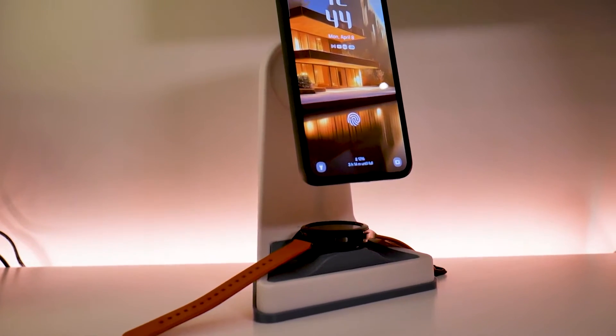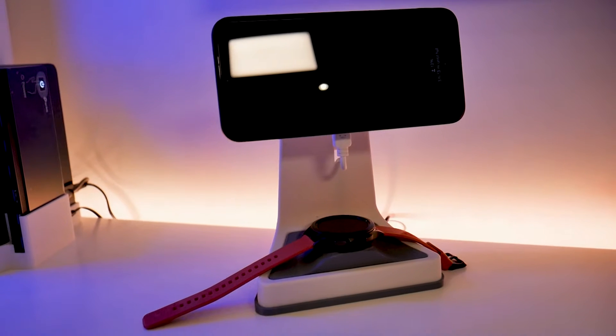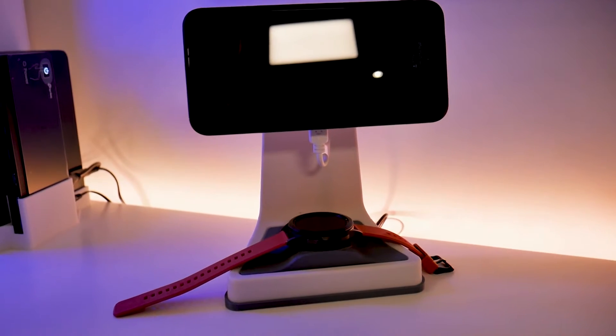On the bottom there's a spot for charging an accessory like a smartwatch or perhaps even some Apple AirPods. It makes your devices easily accessible on the top of your desk and your phone can be viewed both vertically and horizontally.